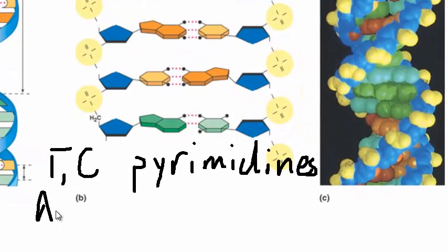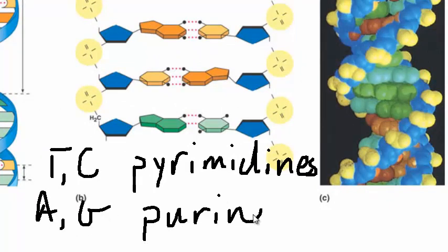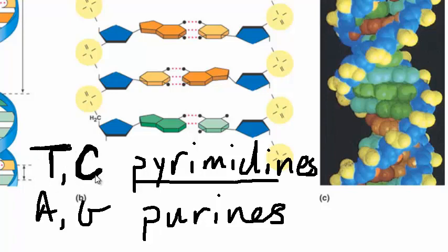And the A and the G are the purines. And the way I remember that is that pyrimidine kind of reminds me of pyramid. And King Tut with a T and Cleopatra remind me of pyramids because they were Egyptian. So that's how I remember T and C are the pyrimidines.